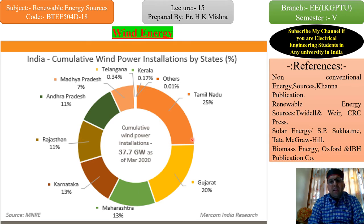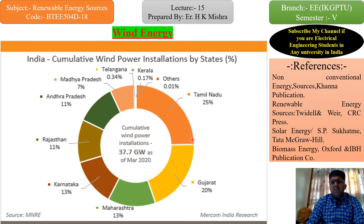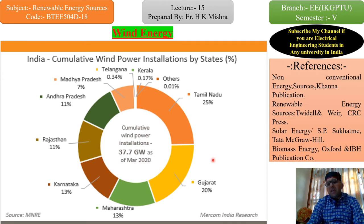Andhra Pradesh contributes about 11%, Madhya Pradesh 7%, Telangana 0.34%, Kerala 0.17%, and some states at 0.01%. Overall, only 5 to 6 states are generating about 90% of India's wind power — Madhya Pradesh 1st, Andhra 2nd, Rajasthan 3rd, Karnataka 4th, Maharashtra 5th, Gujarat and Tamil Nadu. Only about 8 states are doing R&D in this sector. Kerala has great scope for wind power with its long coastline, but they are not utilizing it. Similarly, Odisha, West Bengal, Uttarakhand, and Himachal Pradesh have good potential but are not working on it.